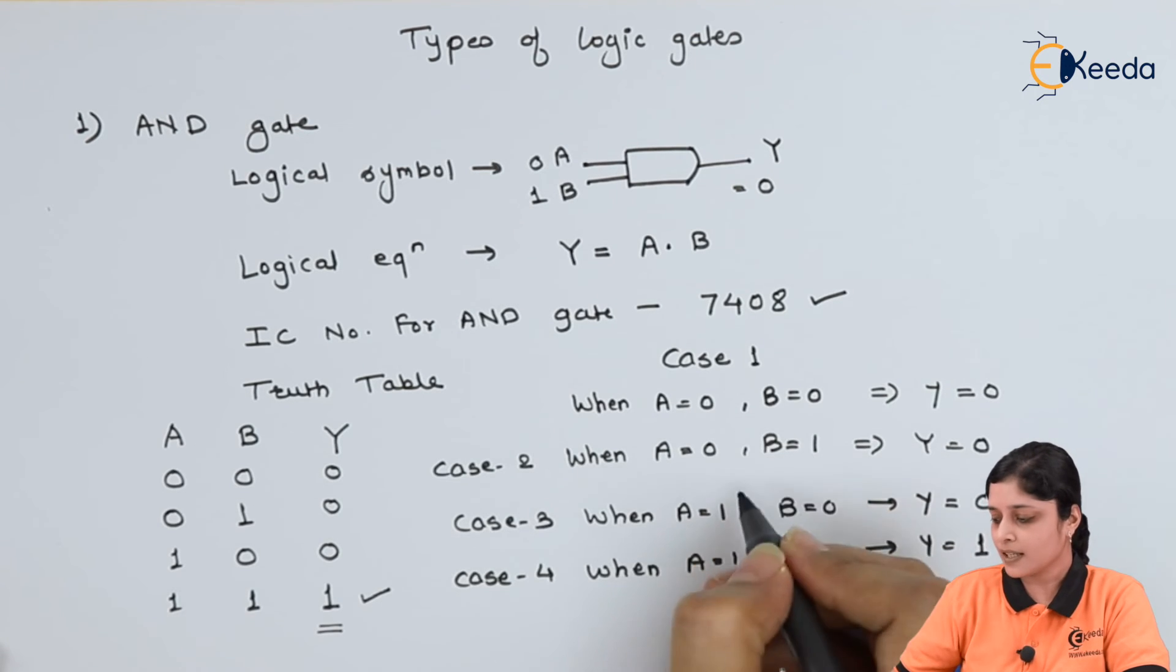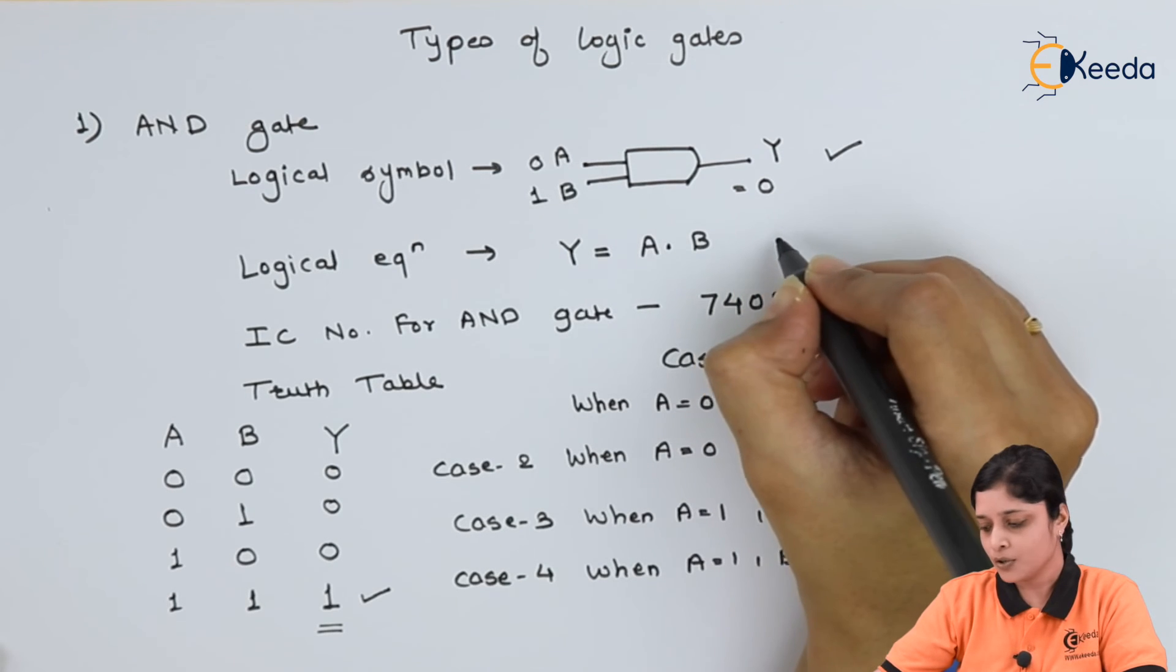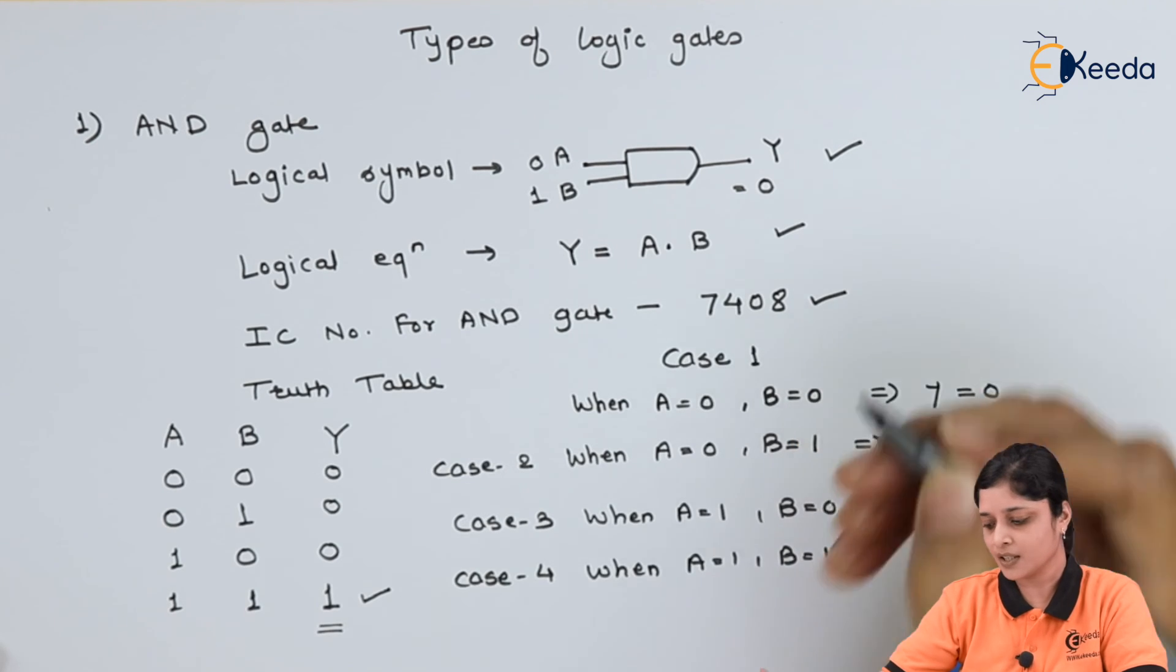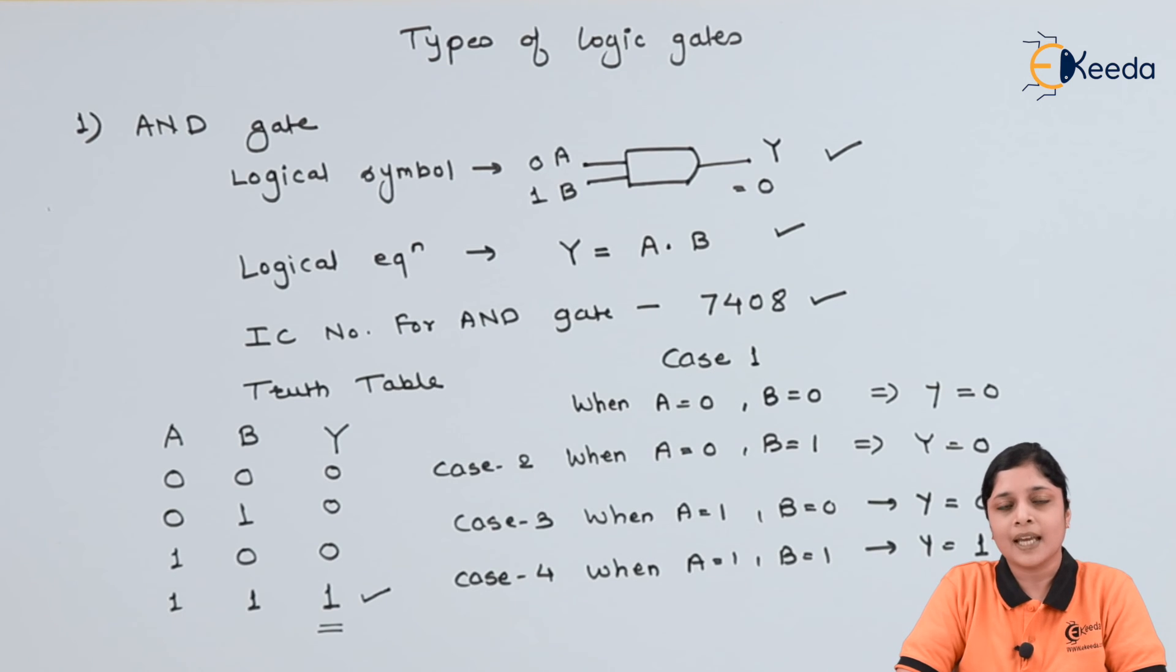So in this way, this is the explanation of truth table, logical symbol. First of all you should know logical equation, always its IC number is also important, and truth table is the required main thing. Thank you for watching this video, stay tuned with eKIDA and subscribe to eKIDA.